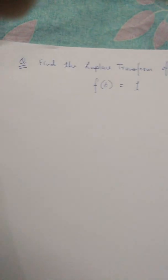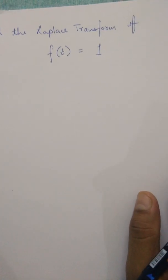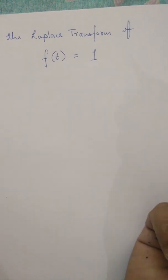Let's switch to the back camera and show you what I have. On a sheet of paper you have the question: find the Laplace transform of f(t) = 1. I'll use a support for my hand so I know what I'm writing, then I'll look at my sheet and write.